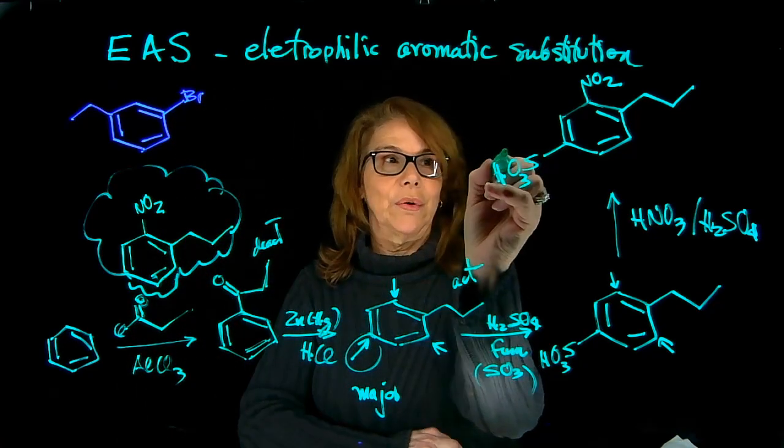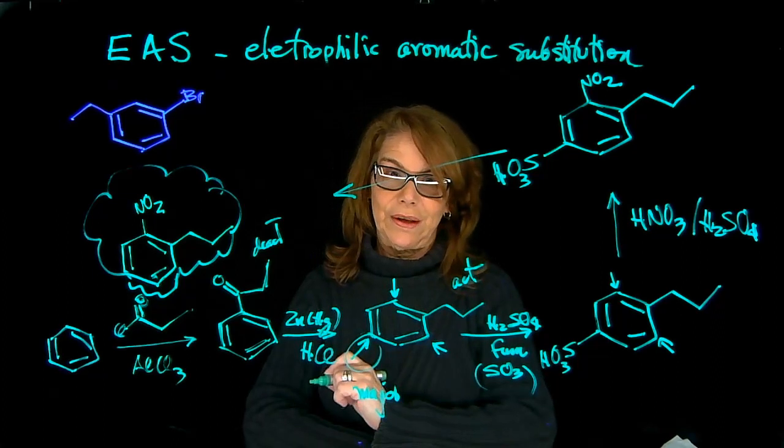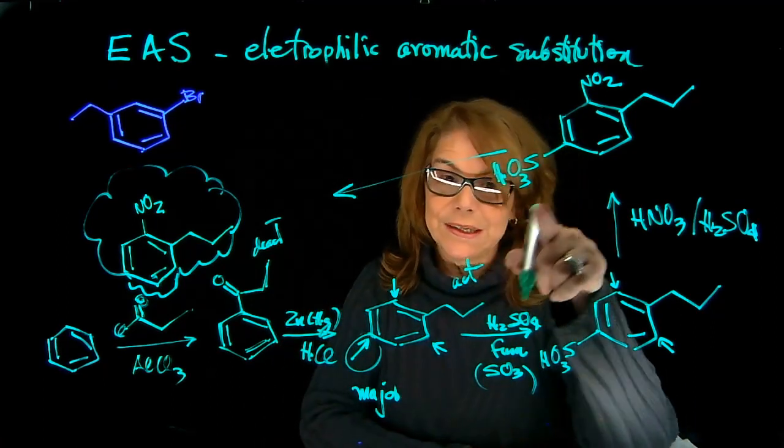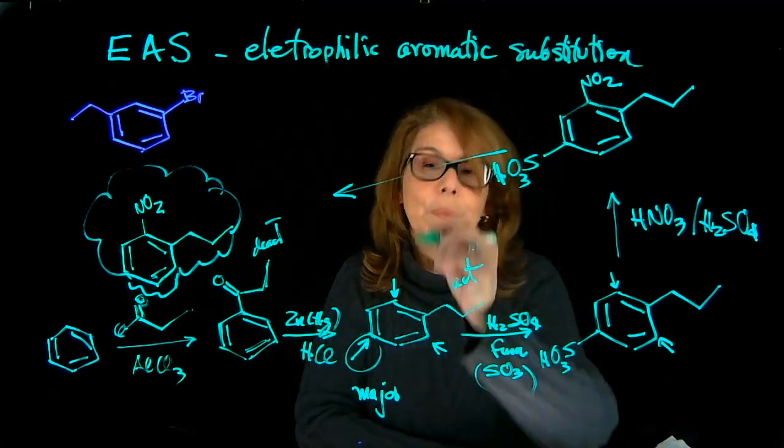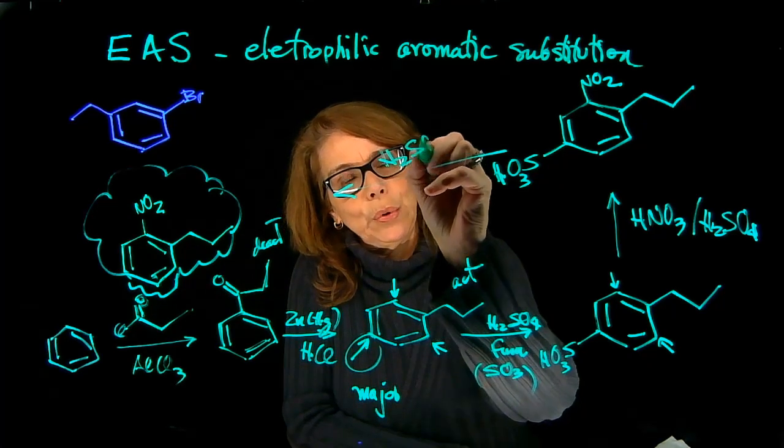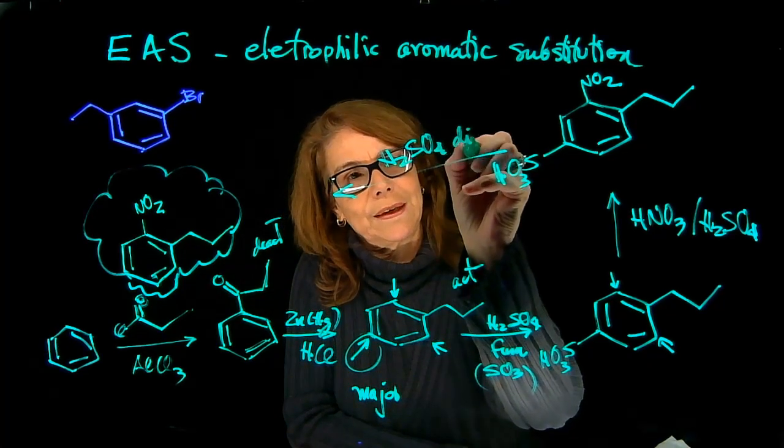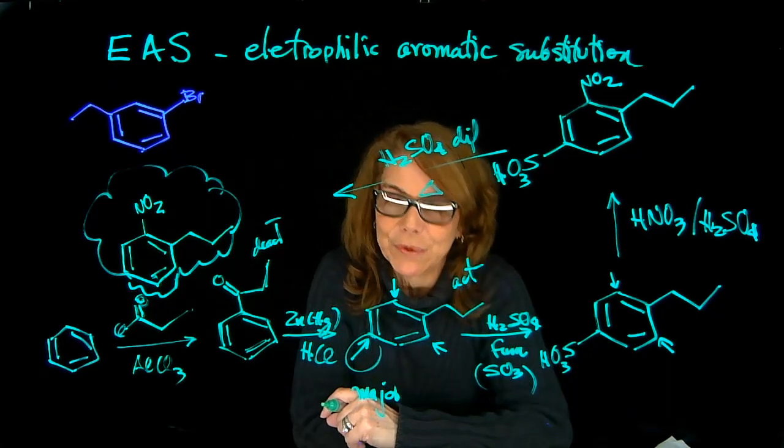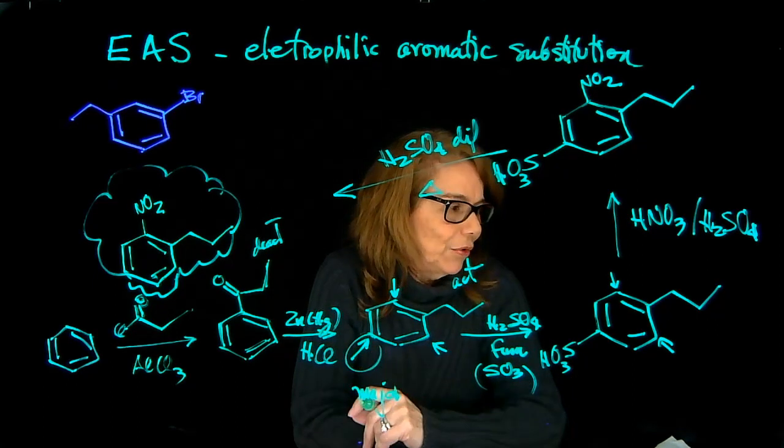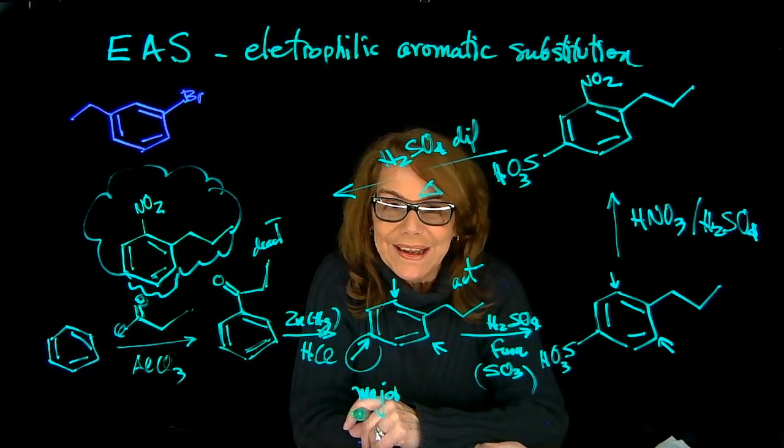How do I remove it and get what I want? My target molecule is this. How do I go from here to there? I need to desulfonate, remove that sulfonic acid group. This is done with diluted sulfuric acid and heat. We remove that sulfonic acid group. So here is your strategy.